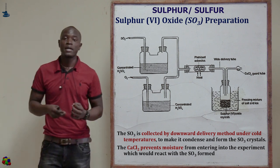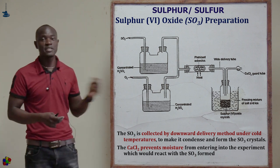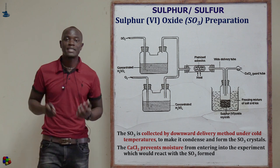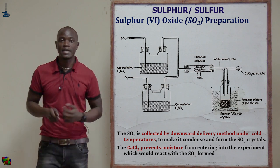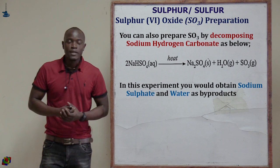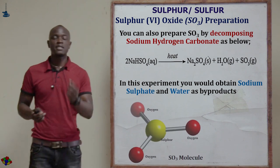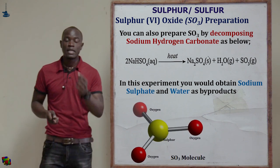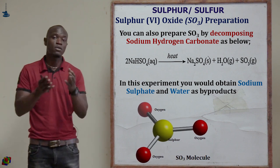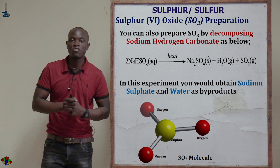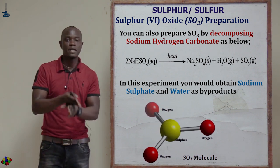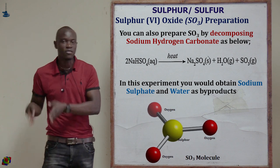This is the reaction whereby sulfur 4 oxide reacts with oxygen to produce sulfur 6 oxide in the presence of a platinized catalyst. So the first method of preparing sulfur 6 oxide is to react sulfur 4 oxide with oxygen in the presence of a suitable catalyst to get sulfur 6 oxide.